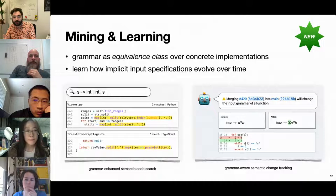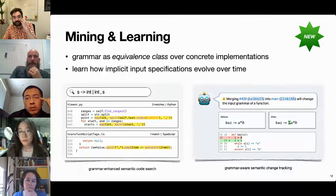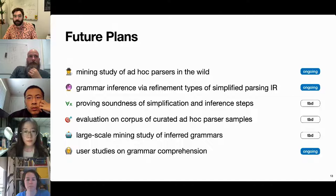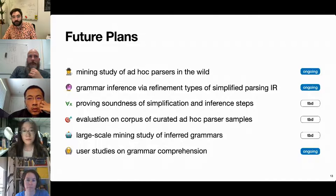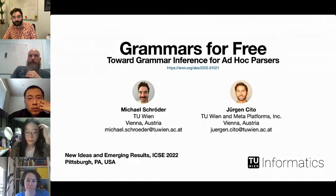You could imagine a build bot that augments code review with current and historical grammar information, alerting the programmer when a code change introduces a change in the input grammar. We are hoping to realize an end-to-end grammar inference system and some of these applications in prototypical form. More information is available in the paper and the long-form video. I want to thank you for listening and invite the community to collaborate with us to realize this vision of grammars for free.